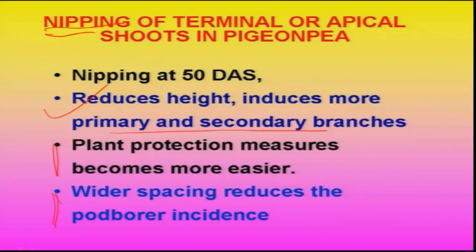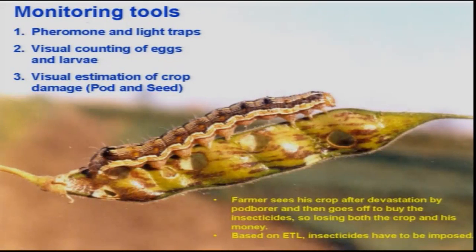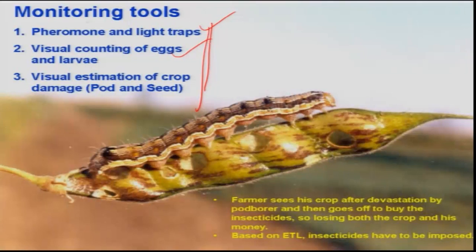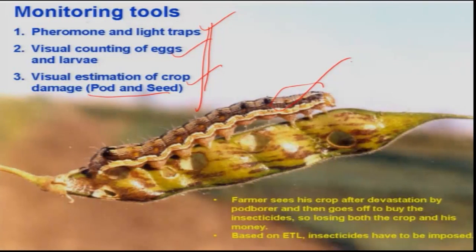Studies have also indicated that wider spacing reduces pod borer damage. Another important component of IPM is monitoring. Various methods exist for monitoring: pheromone and light trap monitoring, visual counting of actual number of eggs and larvae, and visual estimation of crop damage. Farmers often go to the field only when damage is visible and larvae are in a grown-up stage, then apply insecticides — by which time they have already lost the crop and the spraying cost is also a burden.